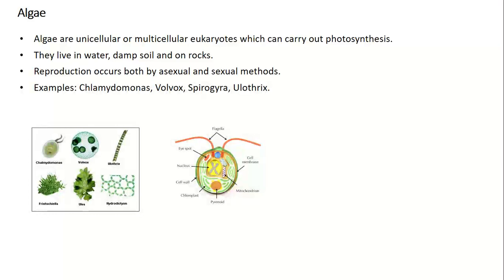Algae are unicellular or multicellular eukaryotes which contain a nucleus and can carry out photosynthesis. They live in water, damp soil, and on rocks. They reproduce by both asexual and sexual methods. Examples include Chlamydomonas, Volvox, Spirogyra, and Ulothrix.